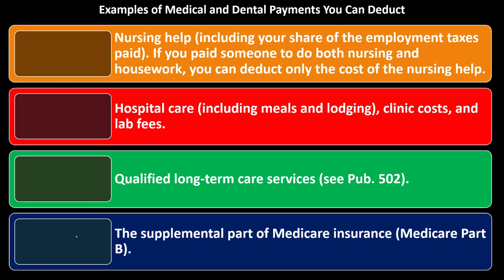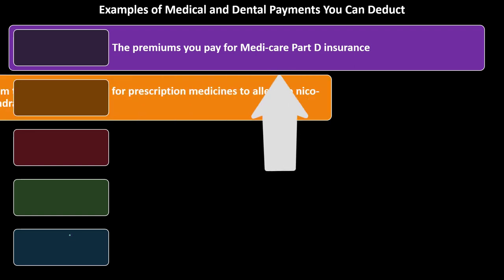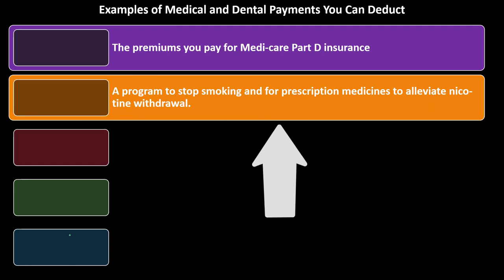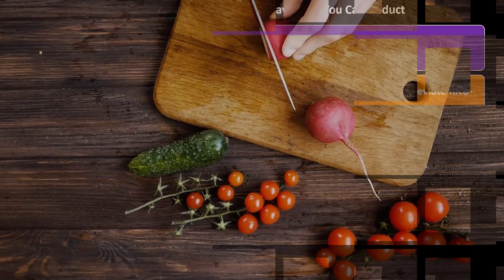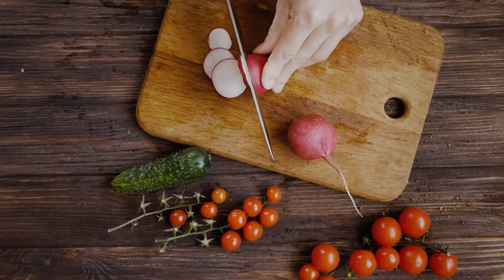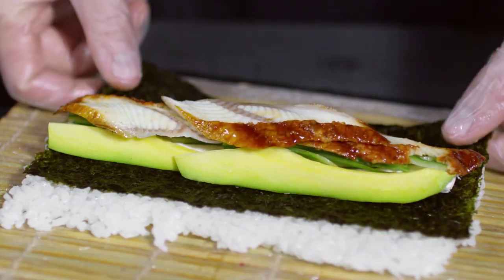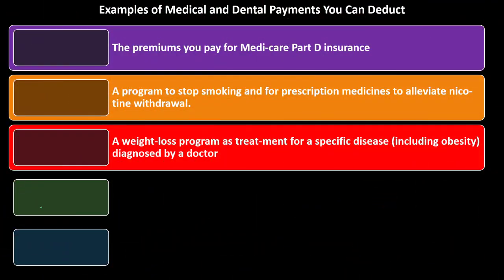The supplemental part of Medicare insurance — Medicare Part B — is deductible. You can also deduct the premiums you pay for Medicare Part D insurance. A program to stop smoking or prescription medicines to alleviate nicotine withdrawal is another deductible item — one that might seem on the fringe, because it's somewhat behavioral. If you accept that, you might think, 'Well, maybe dieting is next,' and then maybe you can deduct certain foods. You can see where these could quickly get out of control in terms of what is deductible or not.